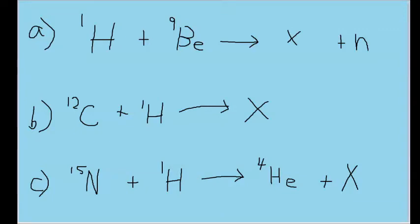This problem asks us to identify X in some nuclear reactions. In the first reaction, part A, we have a hydrogen-1 atom and a beryllium-9 atom reacting to form the mystery particle X and a lone neutron represented by the lowercase n.